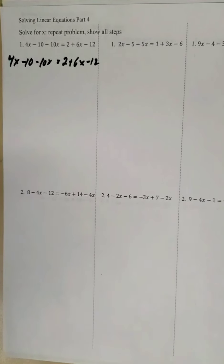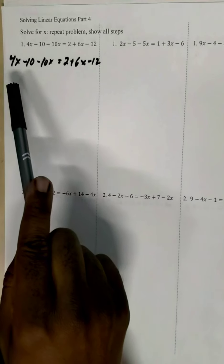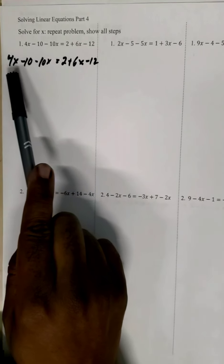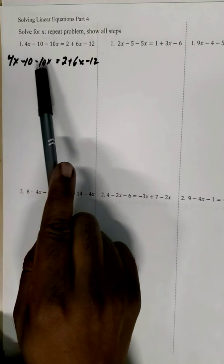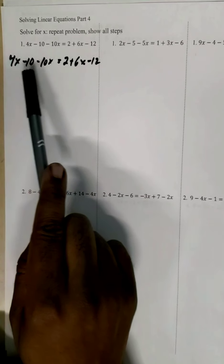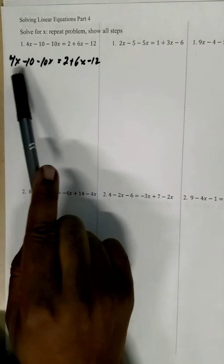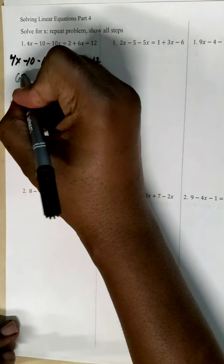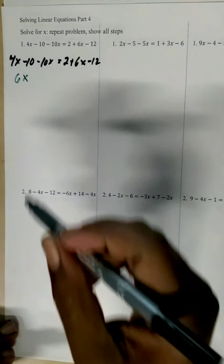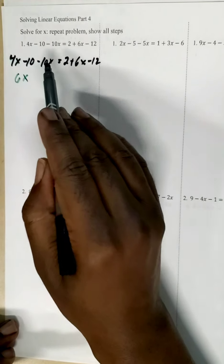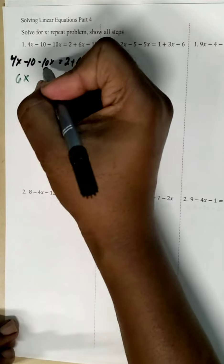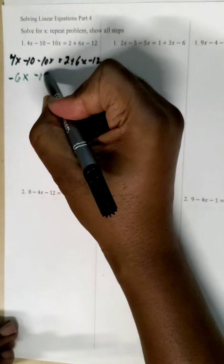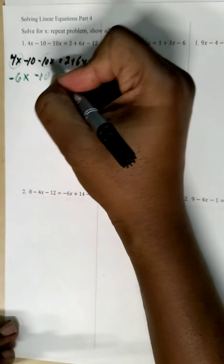First, we're going to look to collect like terms on each side of the equal sign. On the left side, we have like terms of x's, so we're going to combine the 4x and the negative 10x. Different signs subtract, so we're going to get negative 6x, and then we bring down the negative 10.